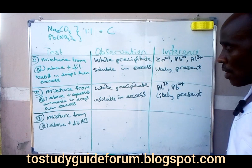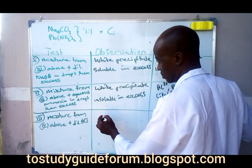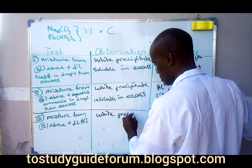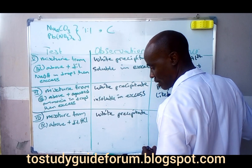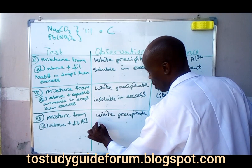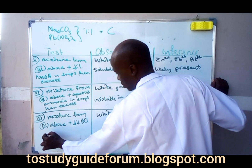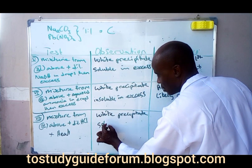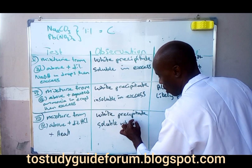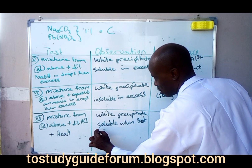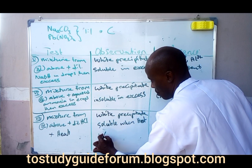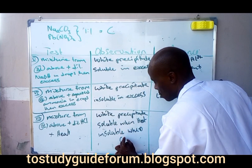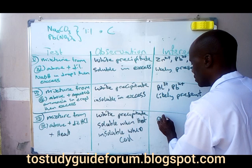From the same mixture, add dilute hydrochloric acid. White precipitates form. On adding heat, the white precipitate is soluble when hot and insoluble when cool. This confirms the presence of lead ion.